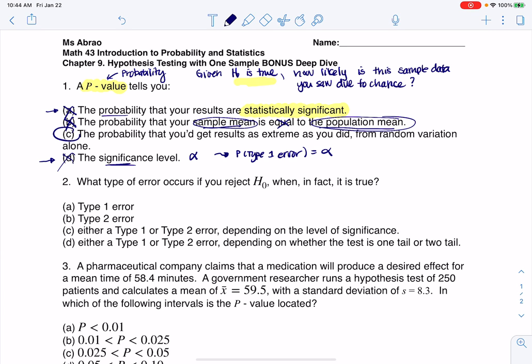And here is the phrasing we're looking for in C. It's a probability that you would get results. You would see sample data, like you did, from random variation. That's a fancy word for just by chance. Again, just because when you run an experiment, something has to happen.